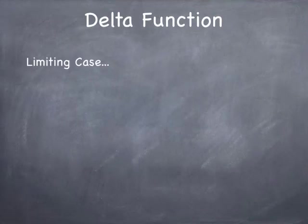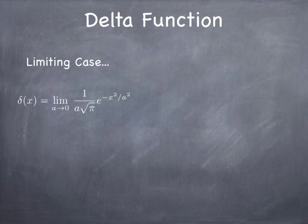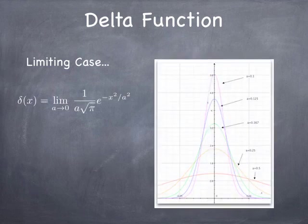There's another example. You could think of it as a limiting case of a Gaussian. Again, it's a Gaussian whose width and height are going to change. When a is large, it's sort of short and wide. As a gets smaller and smaller, it gets taller and skinnier. But again, throughout this variation of a, the area remains fixed.